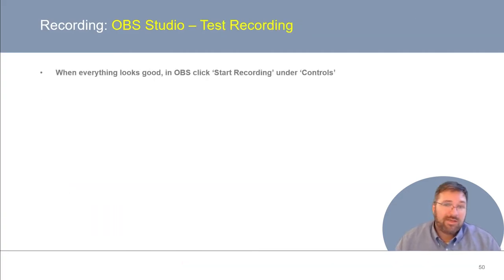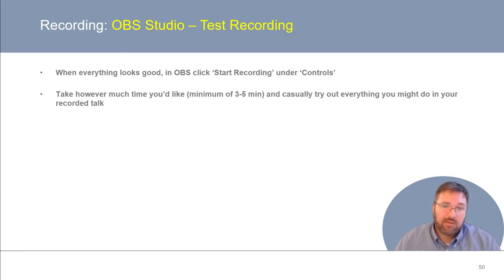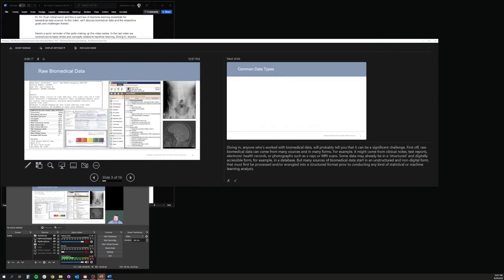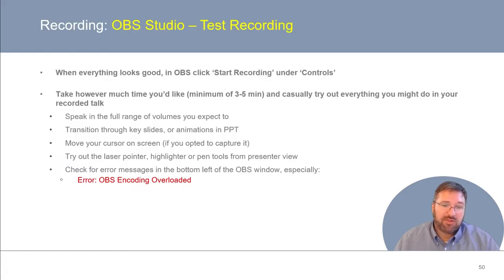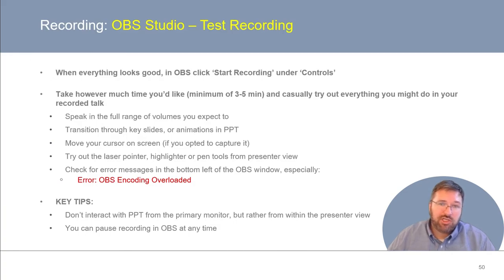Once everything's set up and looks good on your canvas, in OBS click Start Recording under Controls. Take at least three to five minutes, and try out everything you might do in your final recorded talk. Speak in the full range of volumes you expect to use. Try transitioning through key slides or animations in PowerPoint. Move your cursor around the screen if you opted to capture it. Try out the laser pointer, highlighter, or pen tools in PowerPoint if you want to use any of them. Most importantly, check the bottom left-hand corner of OBS Studio to see if an error message appears, such as 'Error: OBS encoding overloaded.' Also, make sure to use the OBS pause button anytime you need a break or need to get your thoughts organized before your next line.